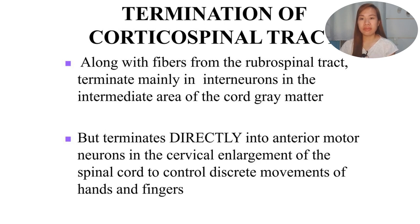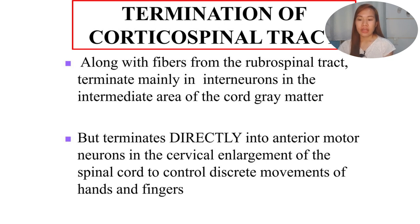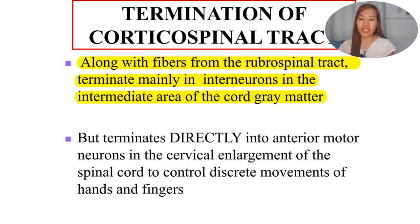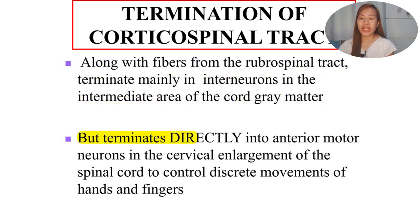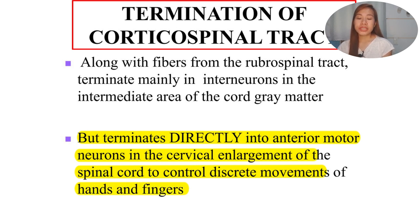We only need a very small amount of motor signal from the cortex to initiate movement. Regarding the termination of the corticospinal tract - along with the fibers of the rubrospinal tract, they terminate mainly in the interneurons of the intermediate area of the cord gray matter. But specifically, it could be in the interneuron or directly into the anterior motor neuron. Some terminate directly into the anterior motor neuron in the cervical enlargement of the spinal cord to control discrete movements of the hands and fingers.